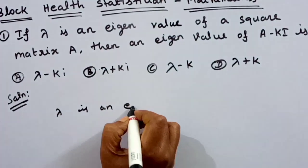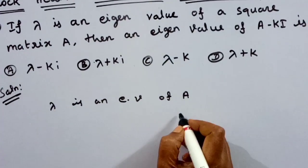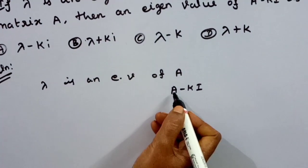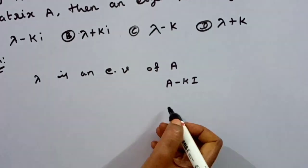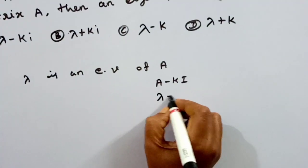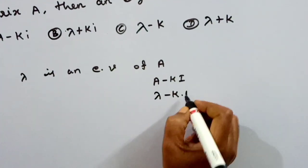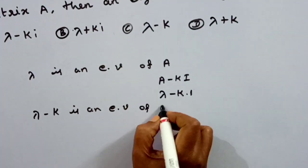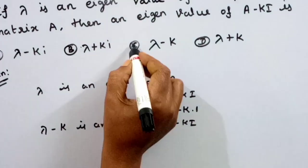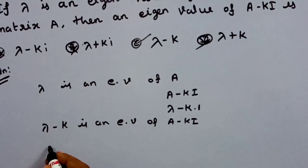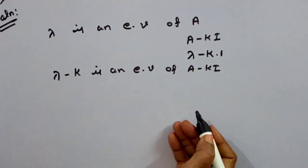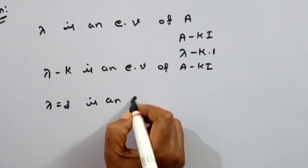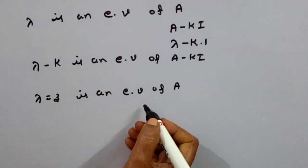Lambda is an eigenvalue of A. We have a polynomial in terms of A — this is an eigenvalue. We will substitute a value in terms of A. For example, if lambda is equal to 3 is an eigenvalue of A, we consider a polynomial expression.